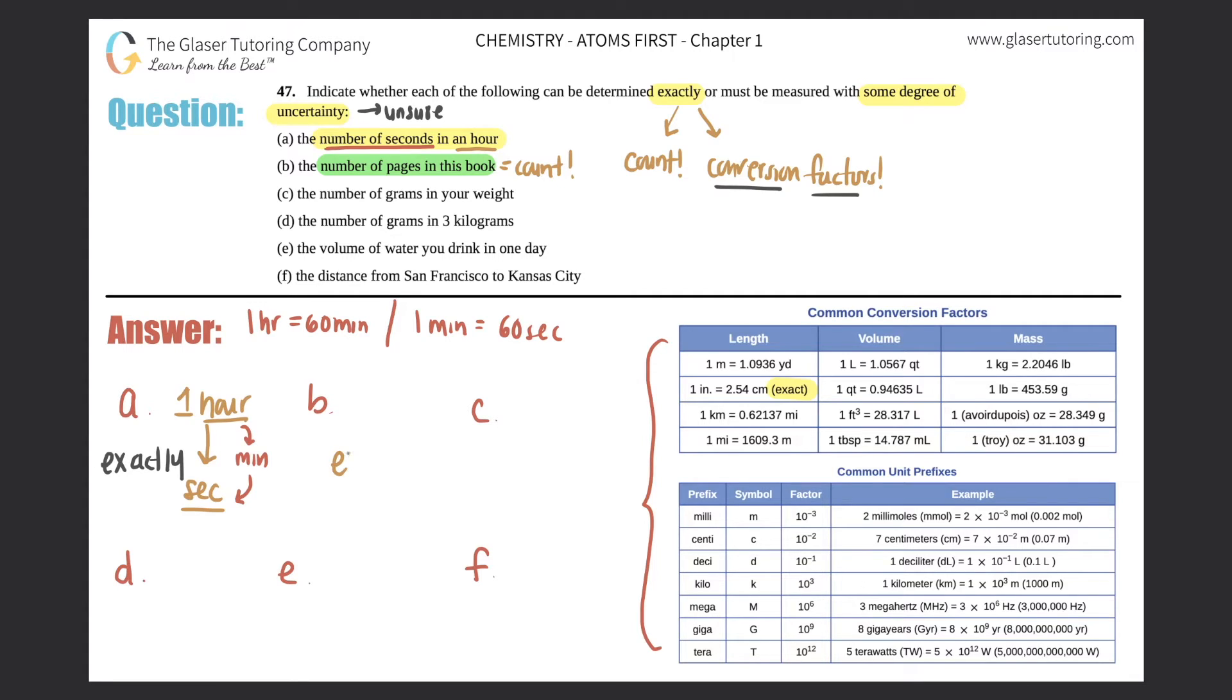Letter c, the number of grams in your weight. Can I count that, use a conversion factor, or am I unsure? If I wanted to determine the number of grams of my weight, well the first thing I would know is I would need to know how much I weigh, which to be honest I don't really know. So with that the case, do I really know how many grams are in my weight? I'm pretty unsure about that. I can't count that, we can't use a conversion factor, so this I would be a little bit unsure about. We would have to use some level of degree of uncertainty.